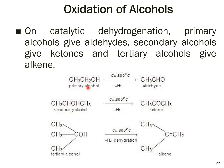In catalytic dehydrogenation using copper metal as catalyst: primary alcohols give aldehydes, secondary alcohols give ketones, and tertiary alcohols give alkenes instead of carbonyl compounds.